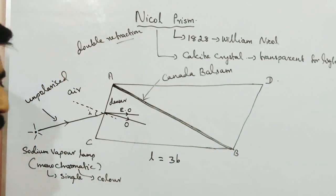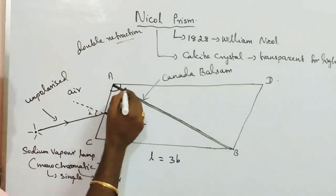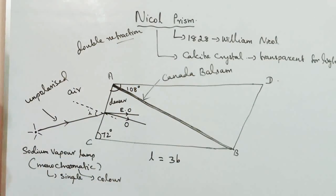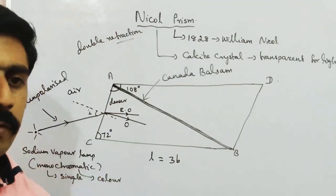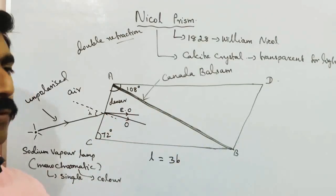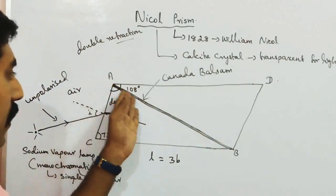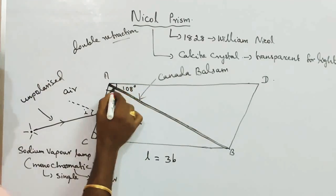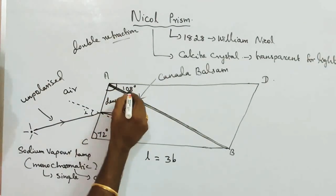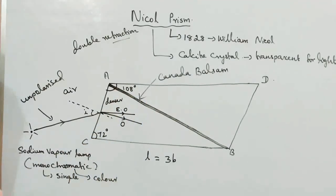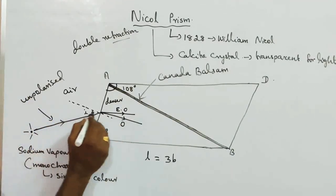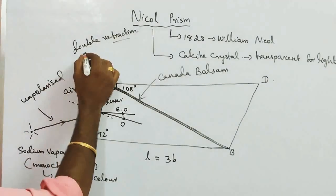The two pieces are cemented with Canada Balsam to make the face angle at A equal to 108 degrees and at C equal to 72 degrees, with an overall angle of 81 degrees. This angle arrangement causes the light to become fully polarised.